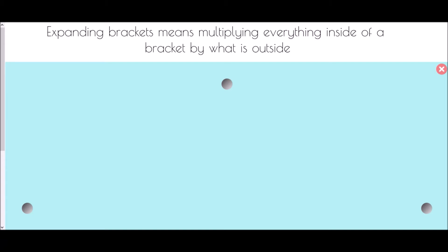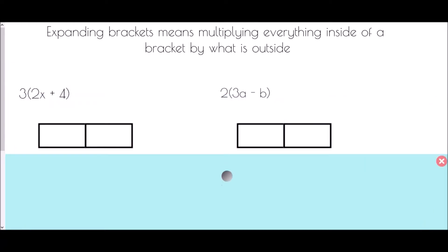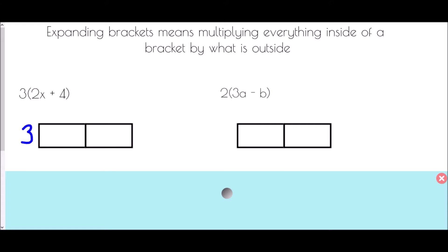Expanding brackets simply means we multiply everything inside a bracket by what is outside. I'm going to use multiplication grids - you may have used these for multiplying large numbers. We'll use them here to make sure we multiply every element by every element required. We're going to multiply 3 by everything inside the bracket.